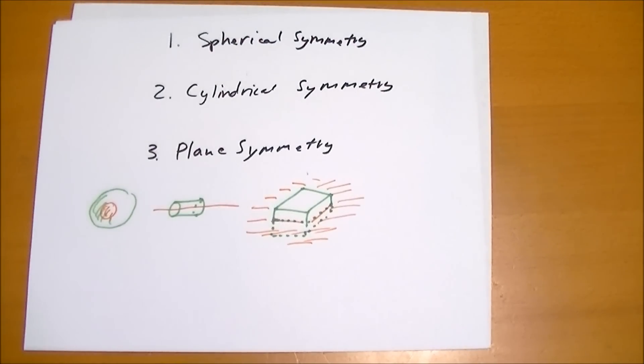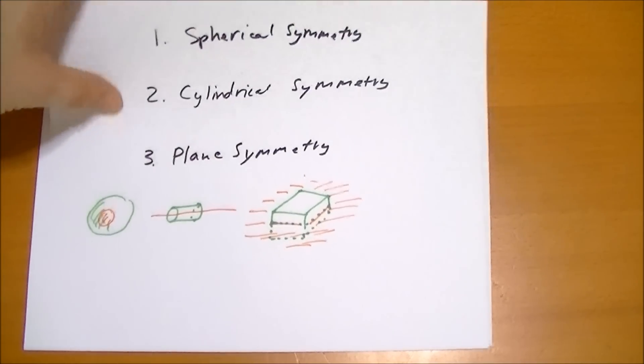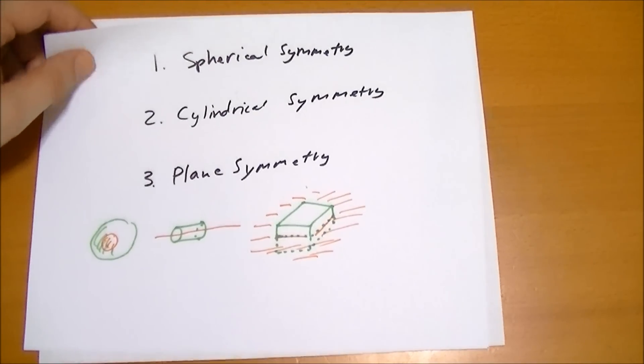Now, you don't ever encounter infinitely long lines or infinitely long surfaces in real life. But as long as you stay away from the edges, Gauss's law will pretty much hold true. So that's the three kinds of symmetry that we would use to apply Gauss's law.